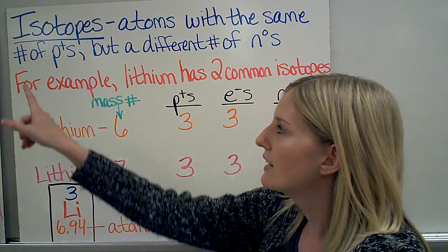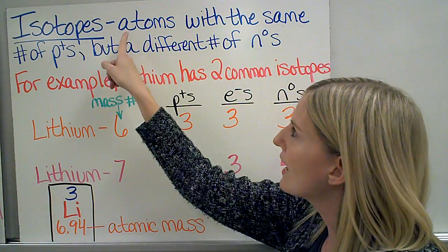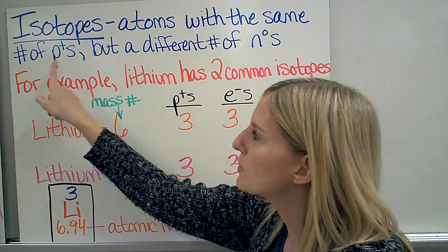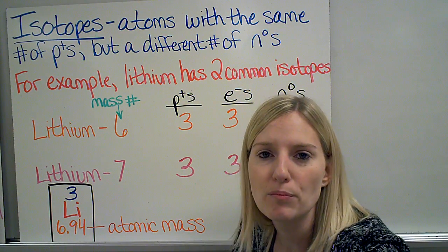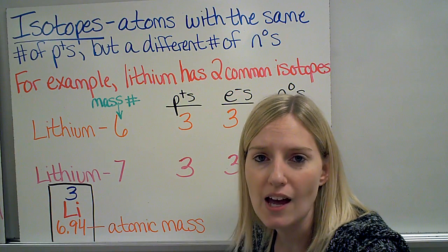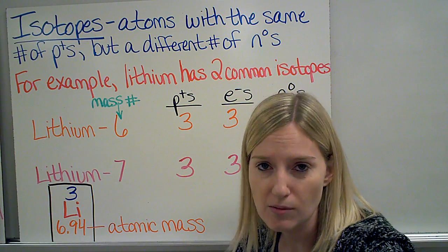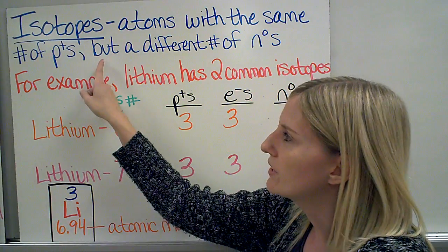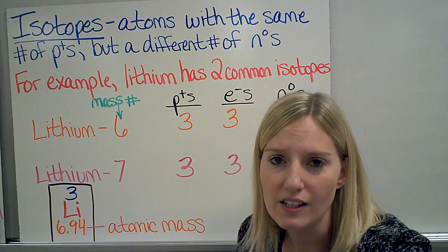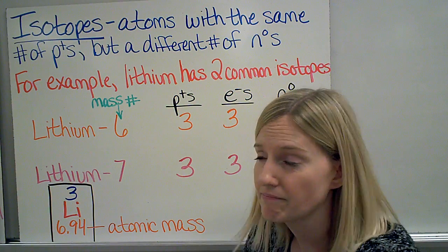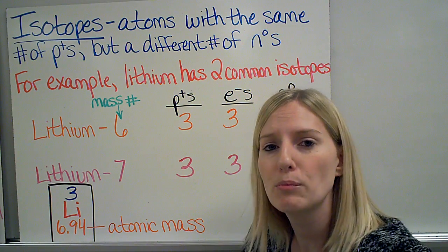We also have something called isotopes. Isotopes are atoms that have the same number of protons. If they have the same number of protons, that means they have the same atomic number, which means they are the same element. However, they are different because they have a different number of neutrons in their nuclei, or their nucleus, plural.